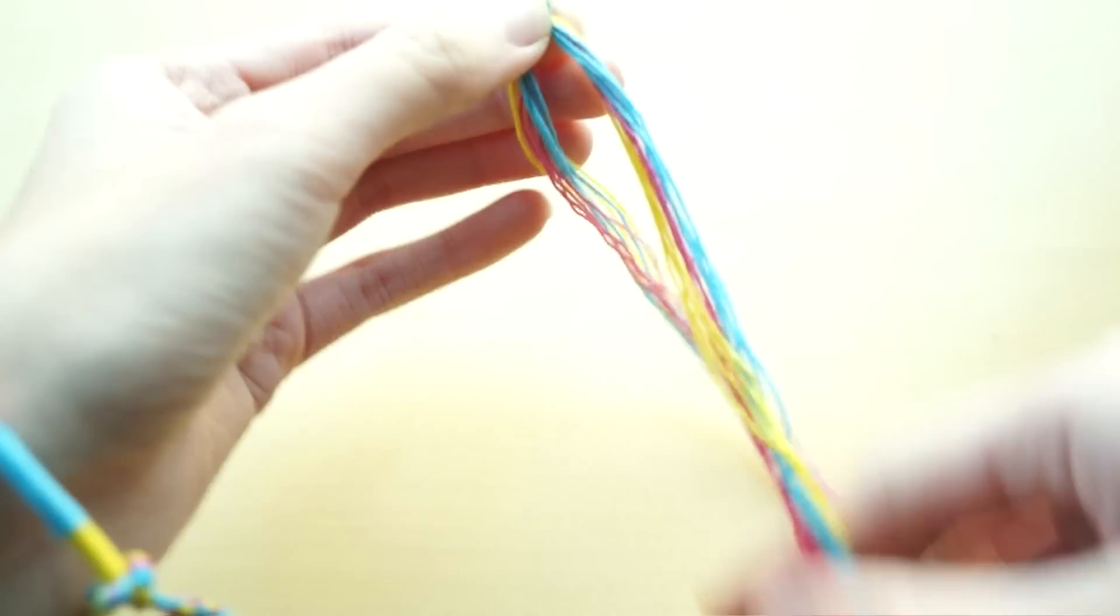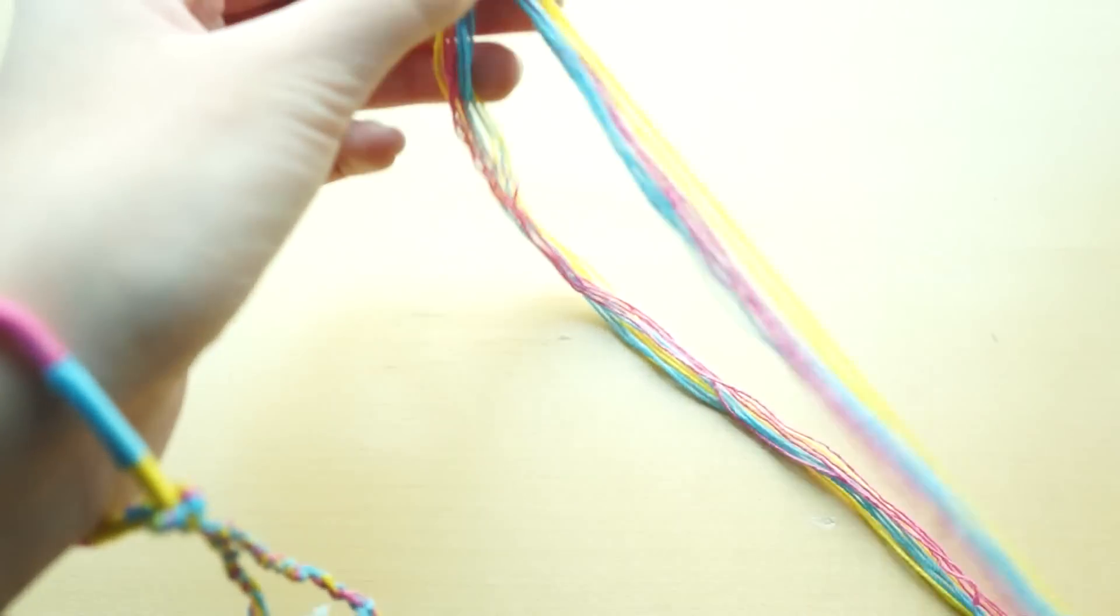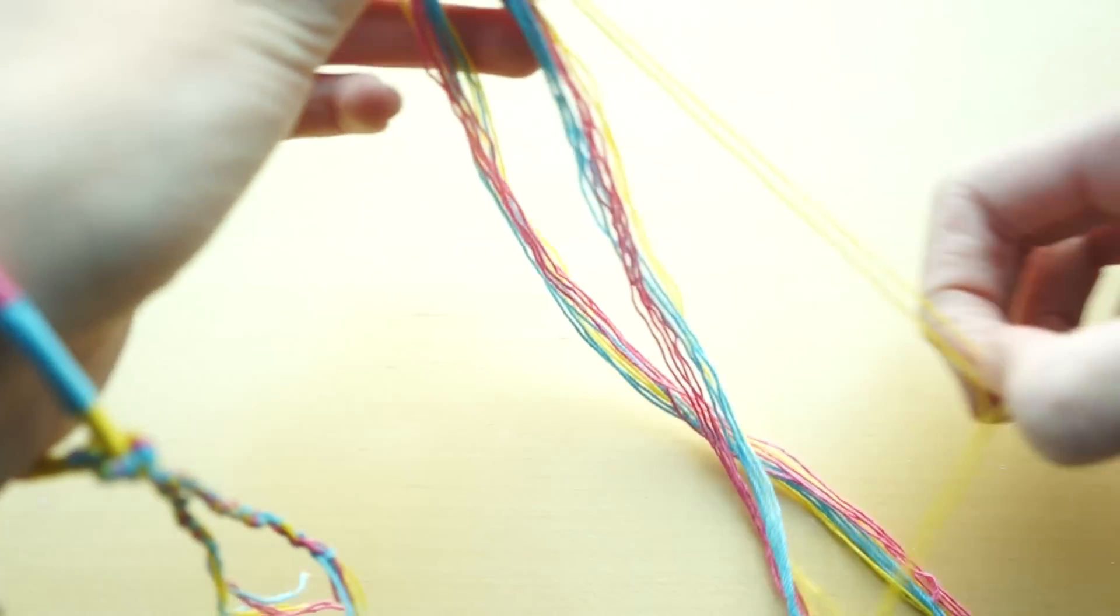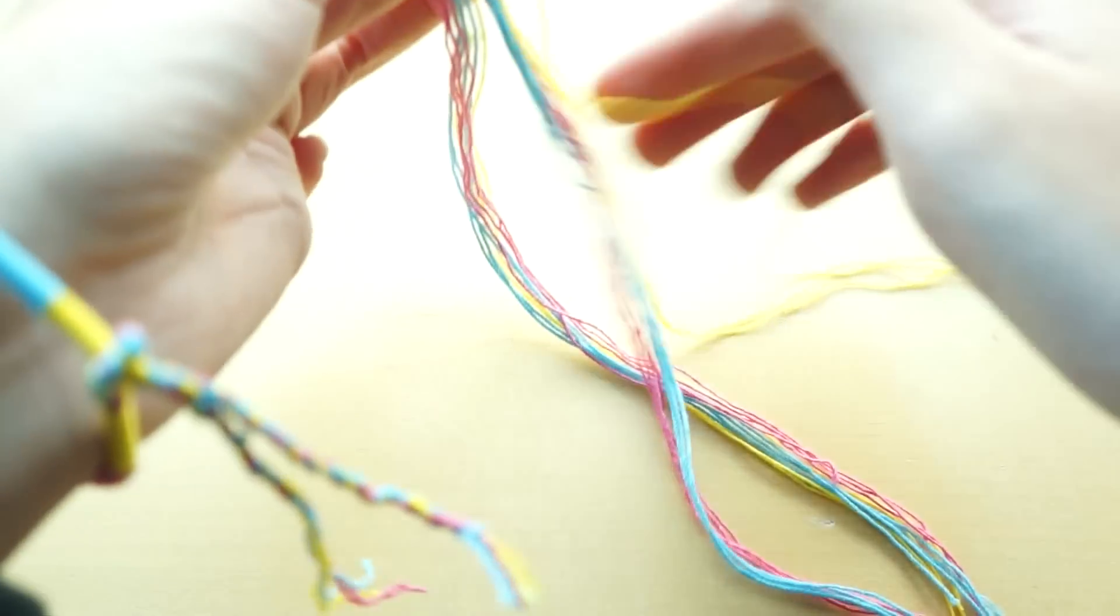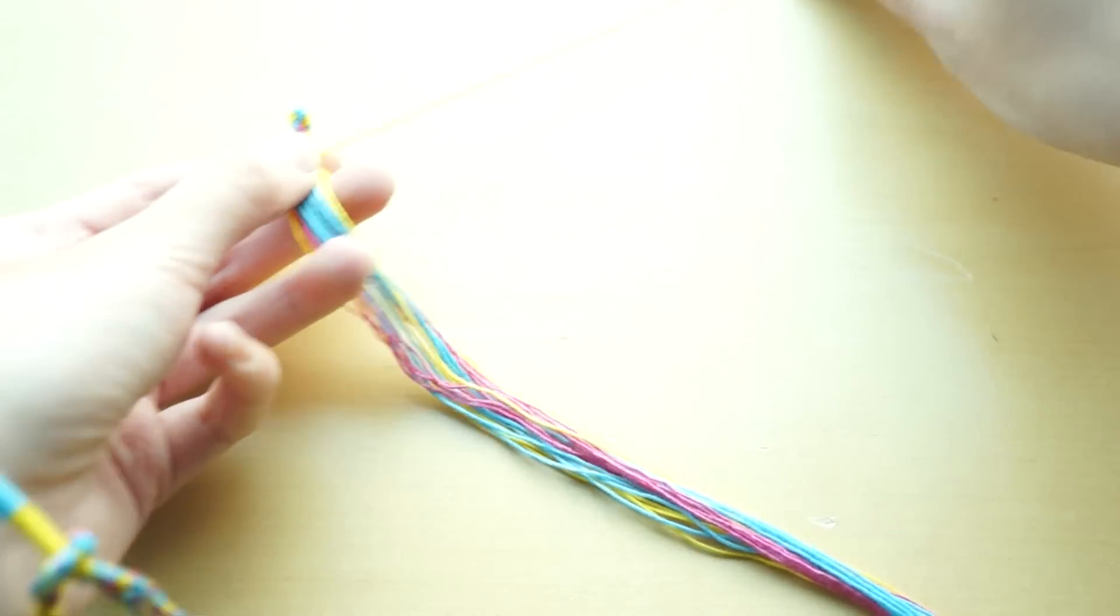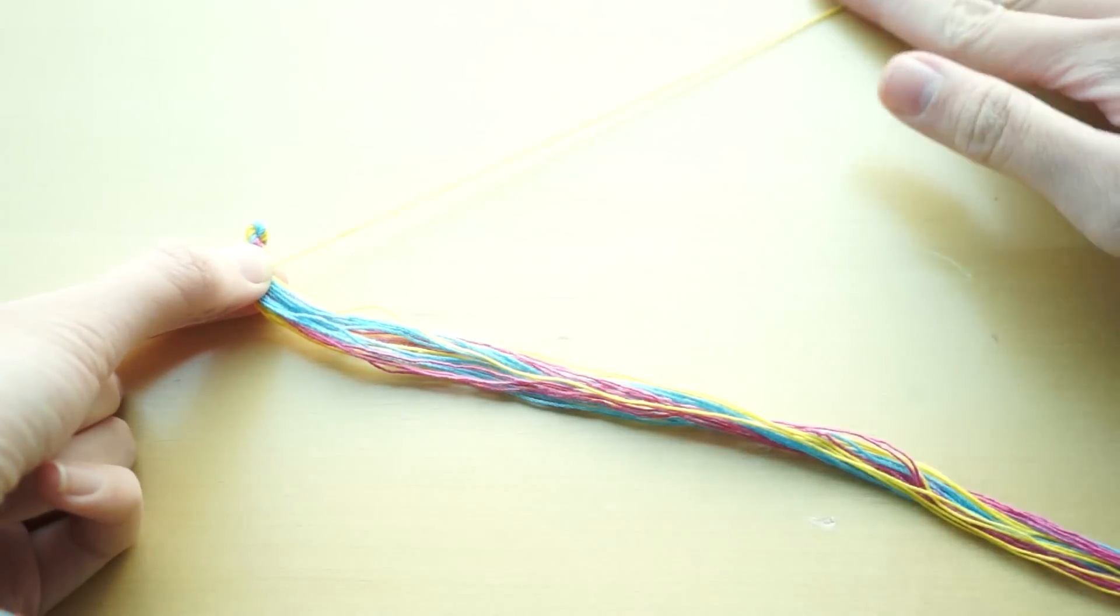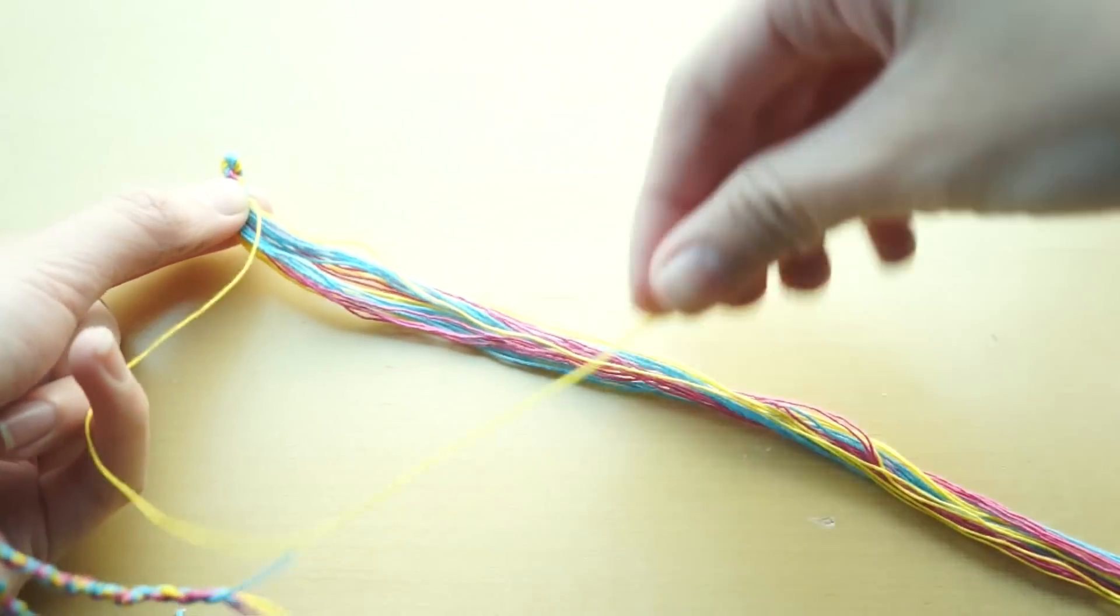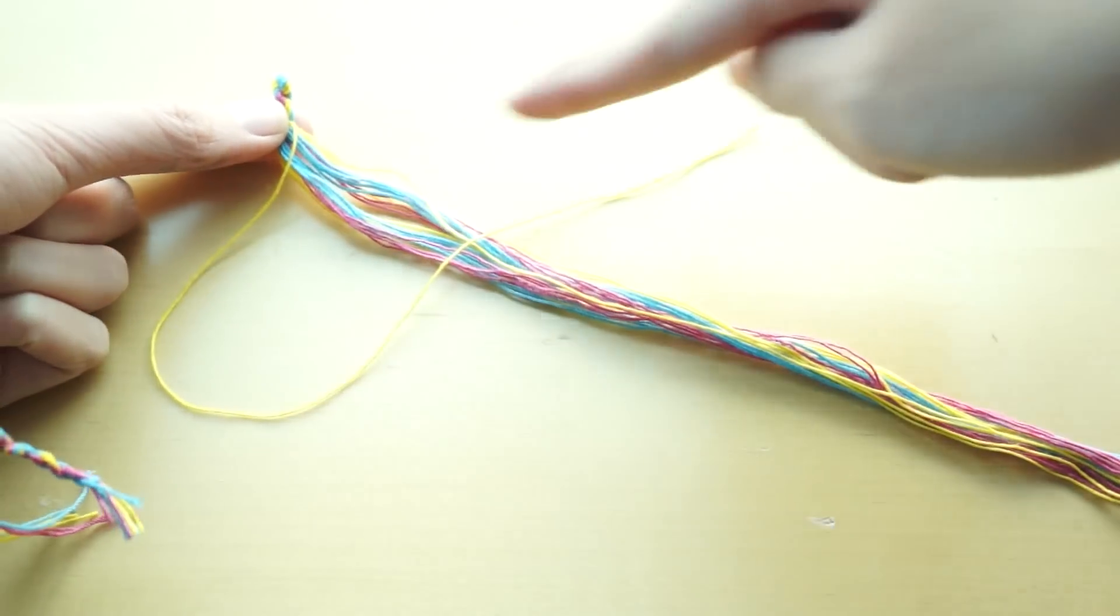So just grab any one of the string that you want to start the bracelet with. I will be using yellow, so I will grab one piece of yellow. Sorry, they just stick together. So here is how you tie the knot. Just get the piece of yellow here, just make a number 4 out of it like this. Get it, so number 4.